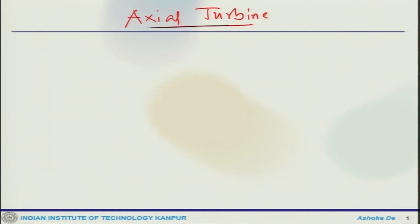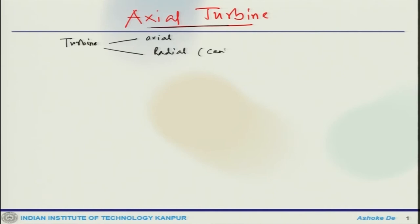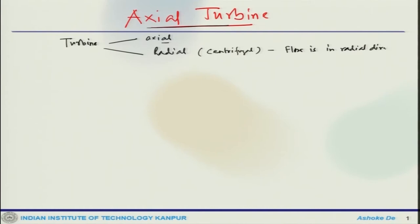At the beginning let me reiterate that turbines could also be of two types — they could be axial or they could be radial, similar to what we talked about with centrifugal compressors. So this could be radial and this could also be axial. We will start with the discussion on axial turbine and then later on we will also touch upon radial turbine. In the radial turbine the flow is in the radial direction, and in the axial turbine the flow is predominantly in the axial direction.